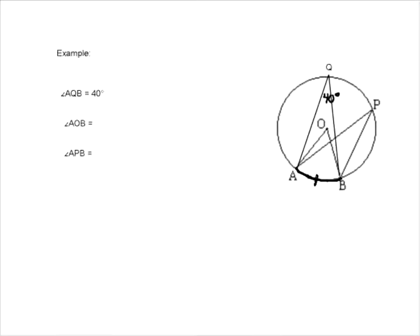Now any inscribed angle that subtends that same arc is going to have the same measure as AQB. What inscribed angle subtends that same arc? APB. So right away we can jump to the conclusion that APB is 40 degrees.